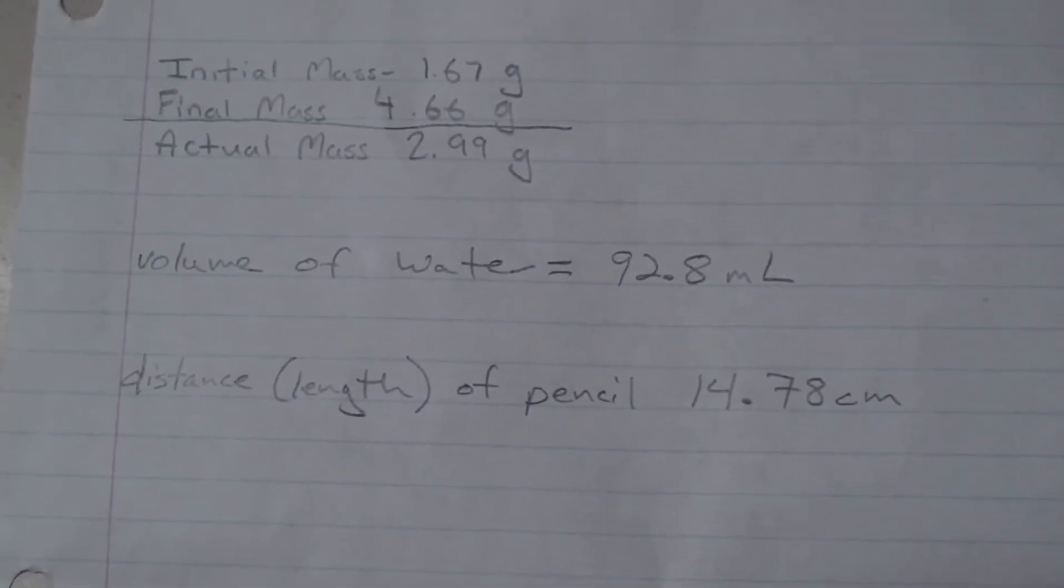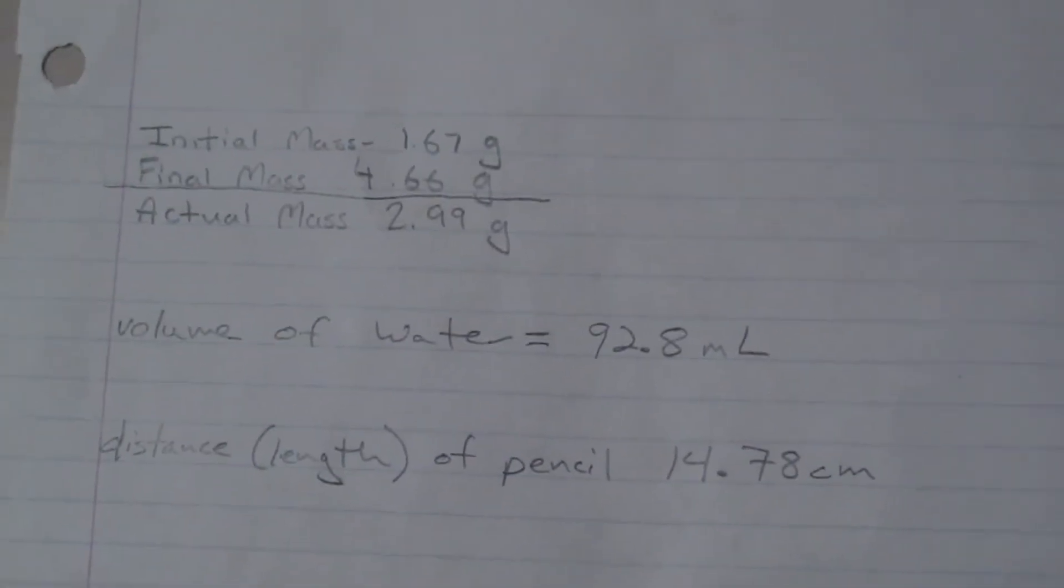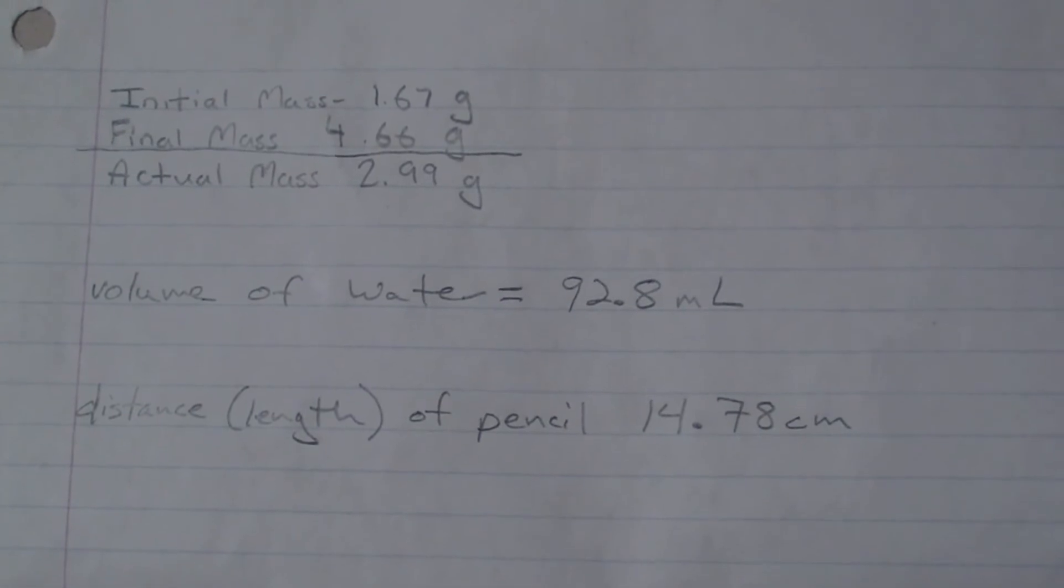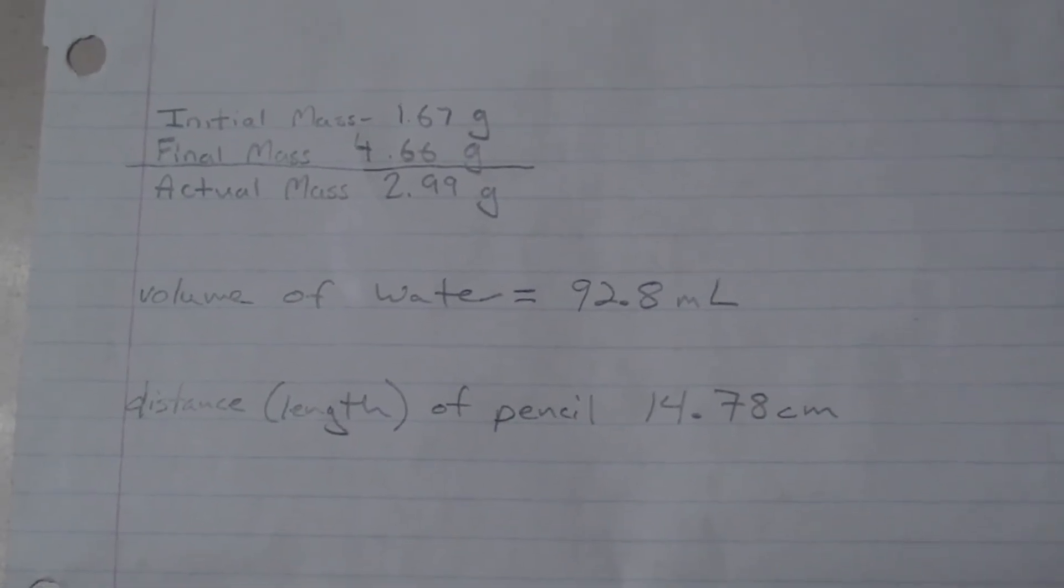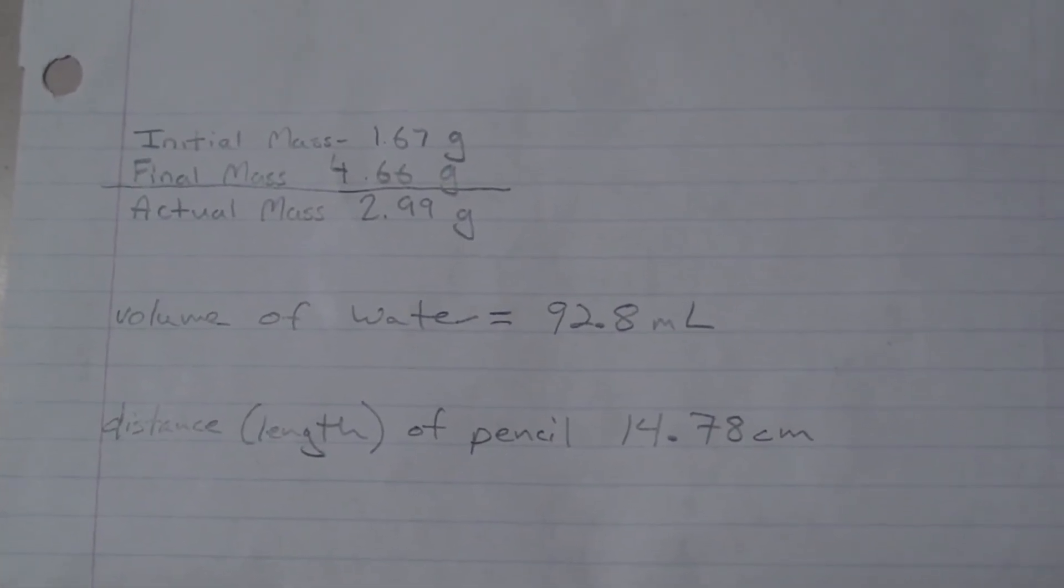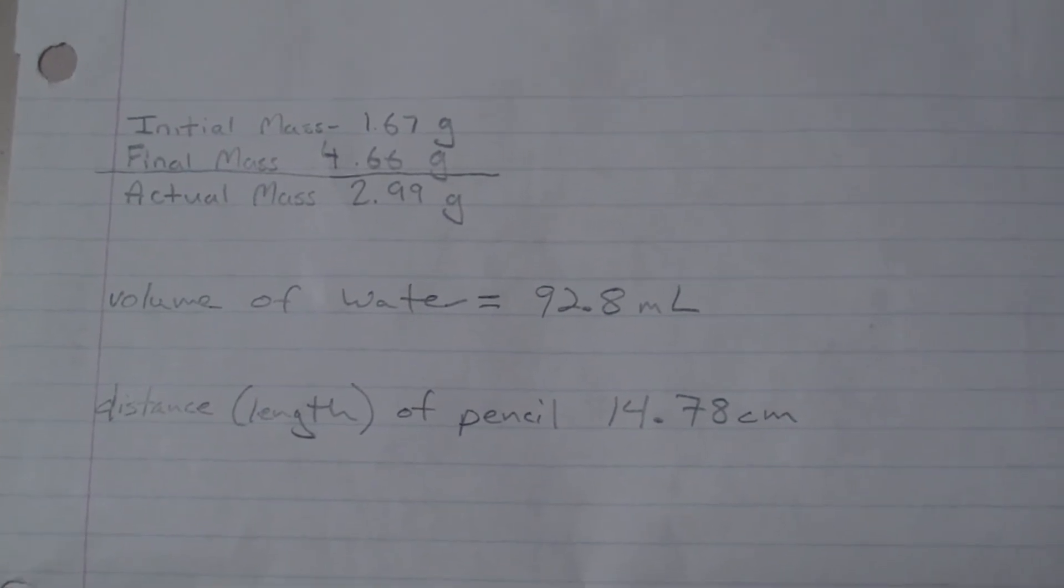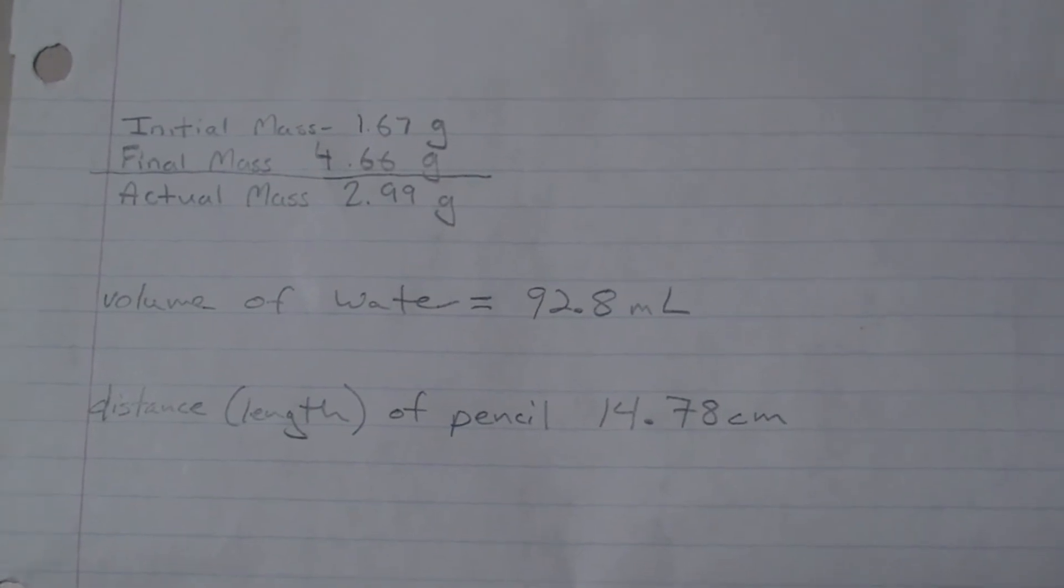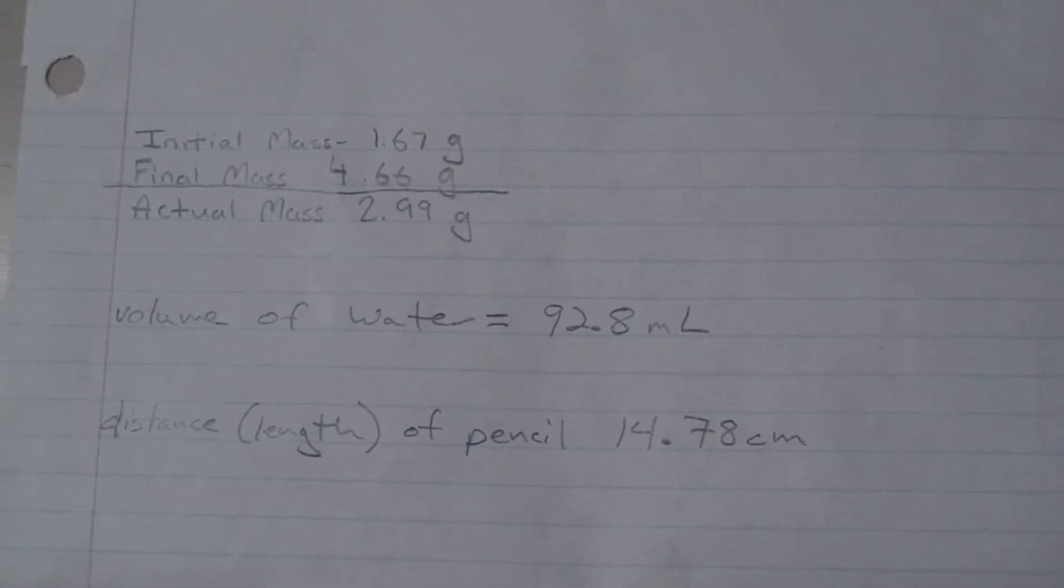And last but not least, we have our volume of water, which was 92.8 milliliters. If you do not have all of this information on your data table, you will not pass. In other words, you have to have every single thing you see here in order to pass the lab skills quiz.